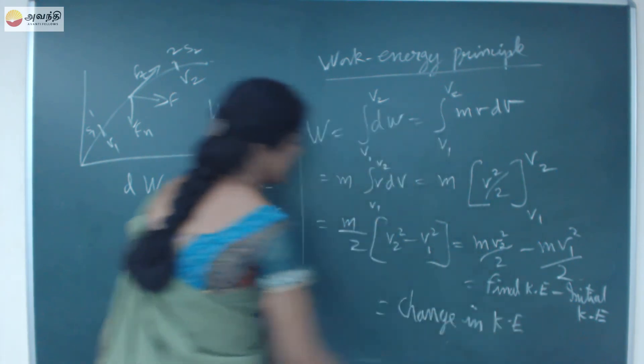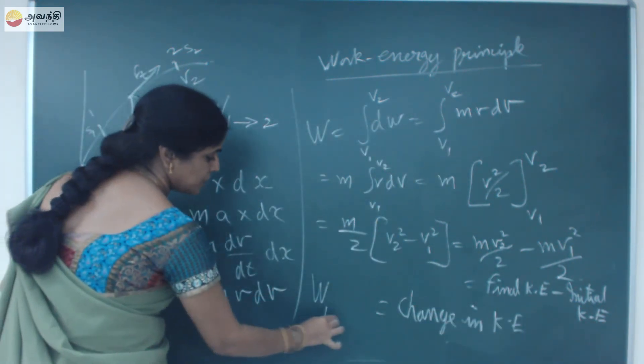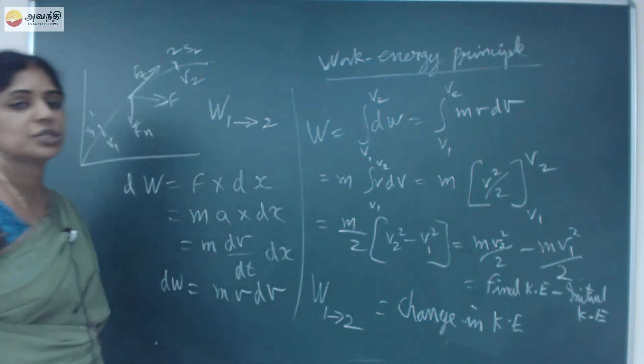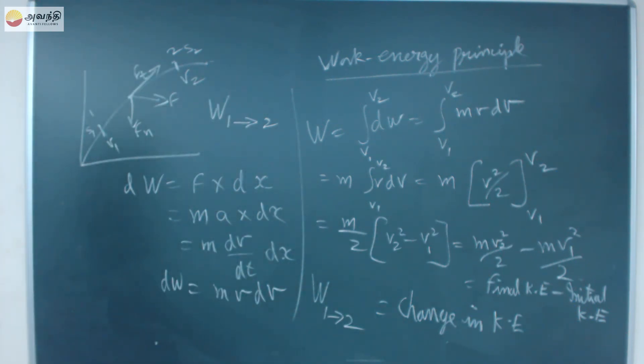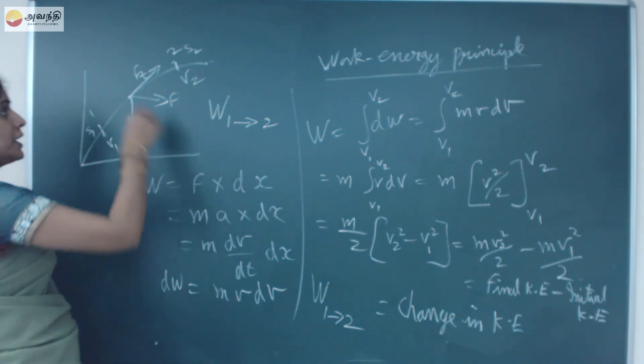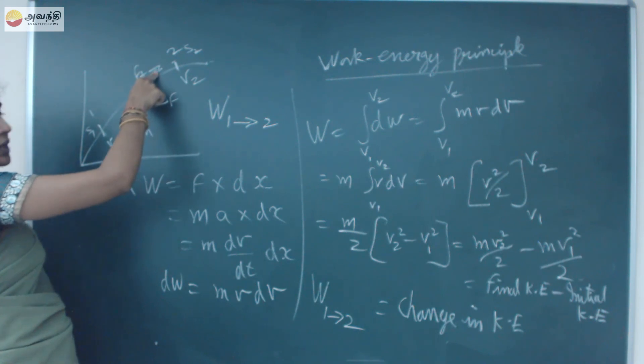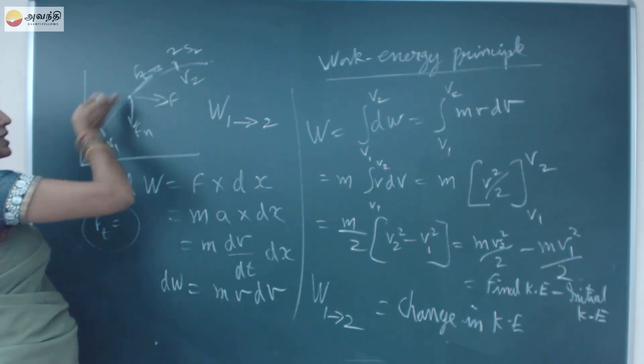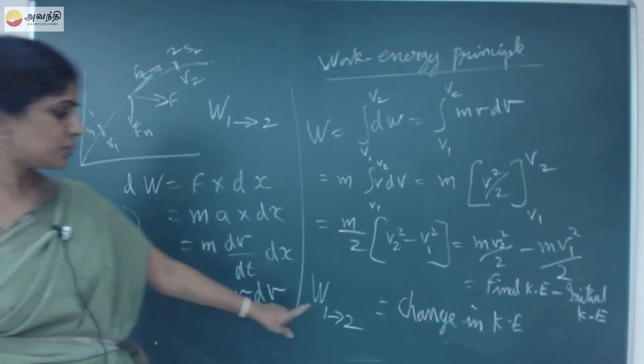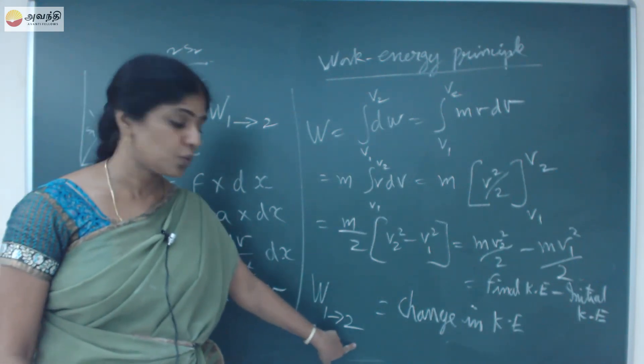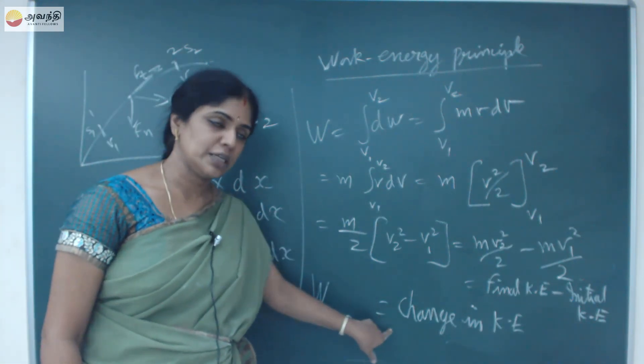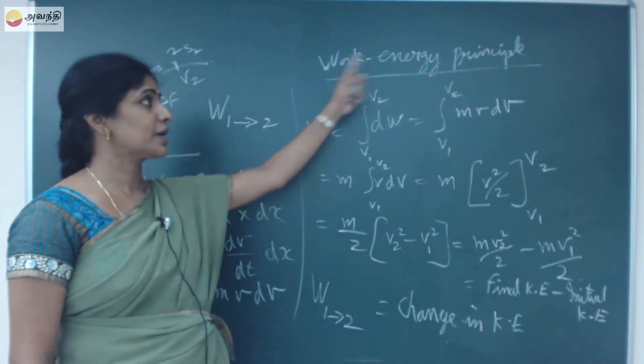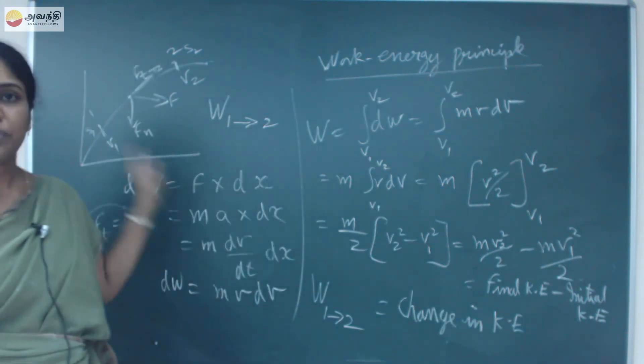So work done in moving the object from position 1 to 2 will be stored as change in kinetic energy. This we call it as a work-energy principle. This ft will provide necessary force for the object. This tangential force is in the direction of the motion of the object. So this work done in moving the object from 1 to 2 will be nothing but, or it is equal to, change in kinetic energy. This we call it as a work-energy principle. It is one important 5 mark question.